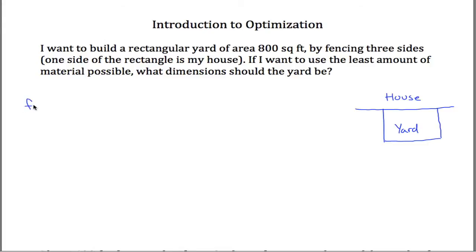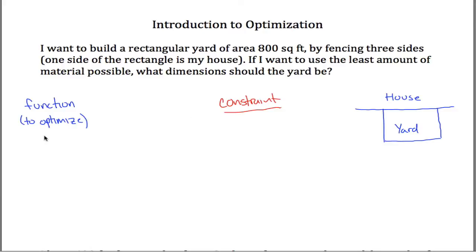In each of these problems, you're going to be looking for two things: a function — specifically a function you're going to try to optimize — and a constraint. You need a constraint because the function you're trying to optimize will have two variables, and we only know how to take the derivative with one variable. So we'll use the constraint to solve for one variable in terms of the other and come up with a one-variable function.